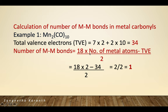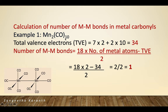Substituting into the formula: (18 × 2 − 34) / 2 = 2/2 = 1. This means there is one bond between the two manganese atoms. In the structure, two manganese atoms are held together by one metal-metal bond, with carbonyl ligands surrounding them.